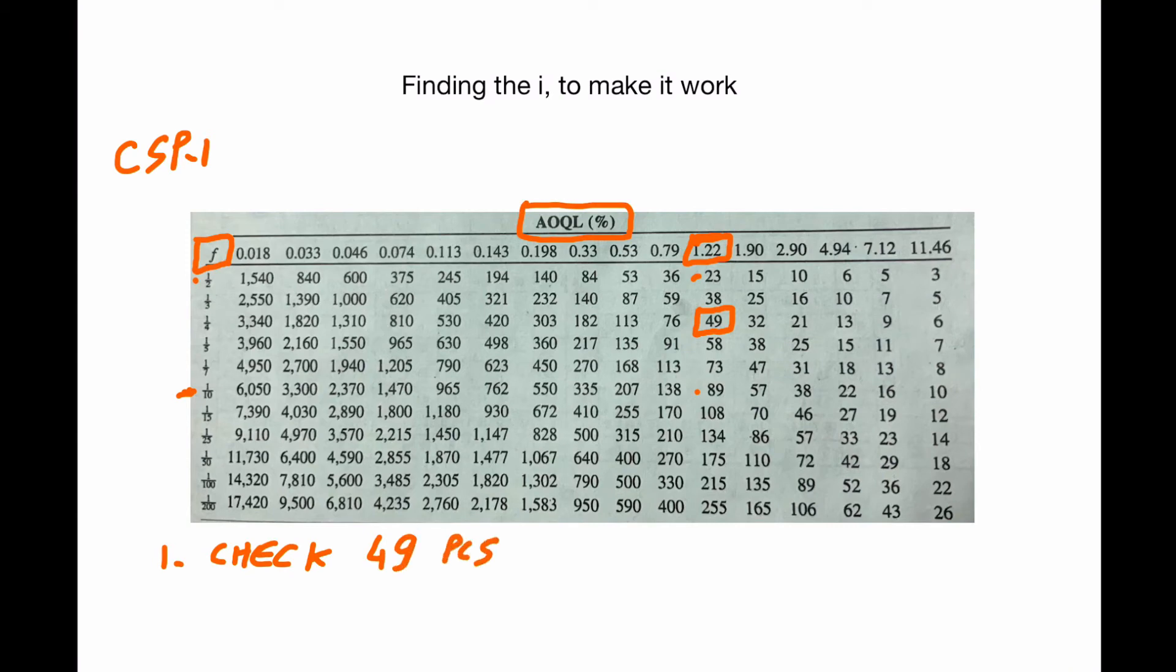Check 49 pieces one after the other, ideally coming out of the process one after the other. If they are all good, switch to inspection, and it's one out of four. Then check one piece every four pieces.